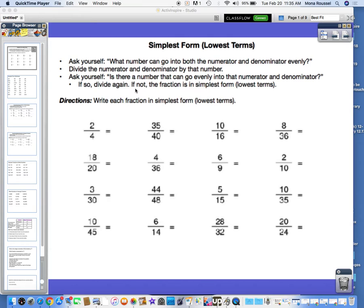What you want to do is find a common factor for both the numerator and denominator. If you find the greatest common factor, that's even better, because that just means it's even quicker for you to simplify the fraction. So what that means is, if you look at the first step, you want to ask yourself what number can go into both the numerator and the denominator evenly.